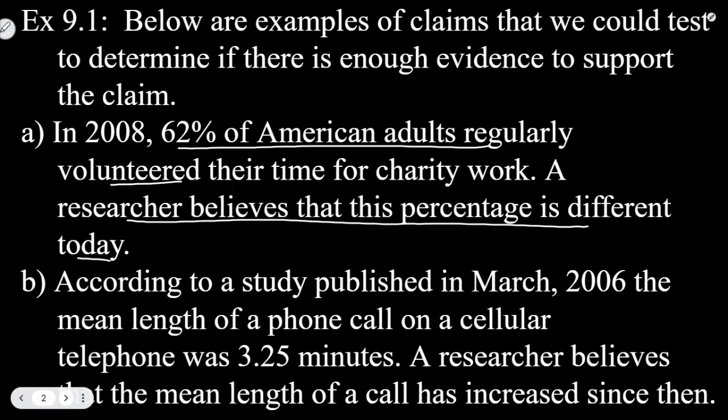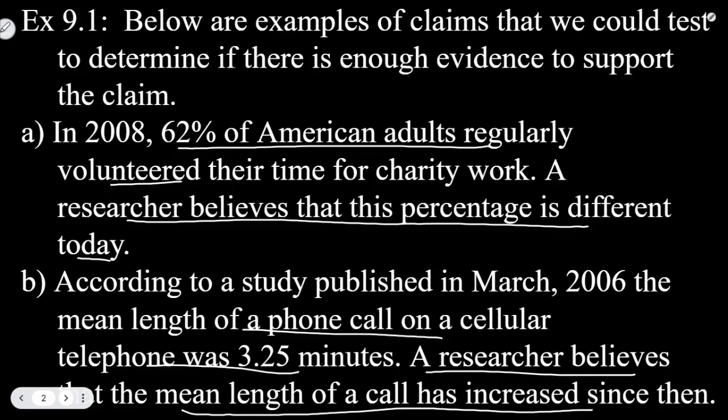Option B: According to a study published in March of 2006, the mean length of a phone call on a cellular telephone was 3.25 minutes. A researcher believes that the mean length of a call has increased since then. We have the original piece of information — the length is 3.25 minutes — and then the researcher's claim that the mean length has increased, which is what we would want to test.